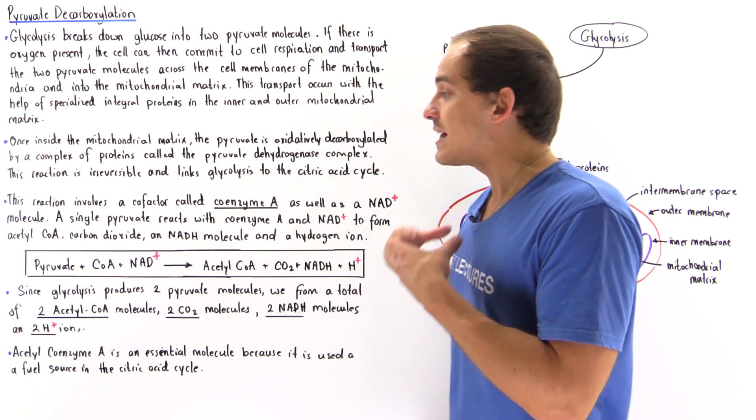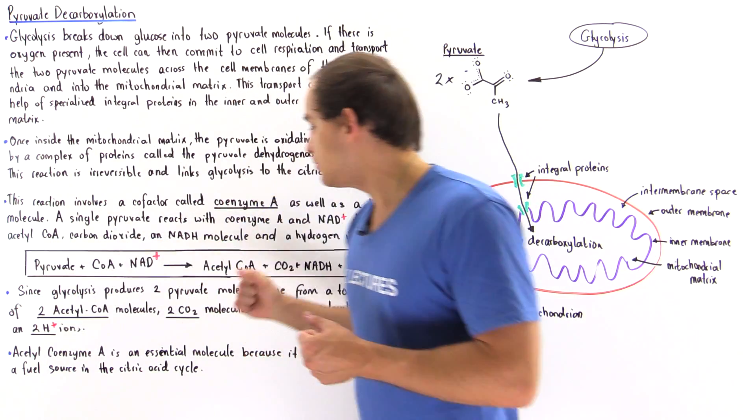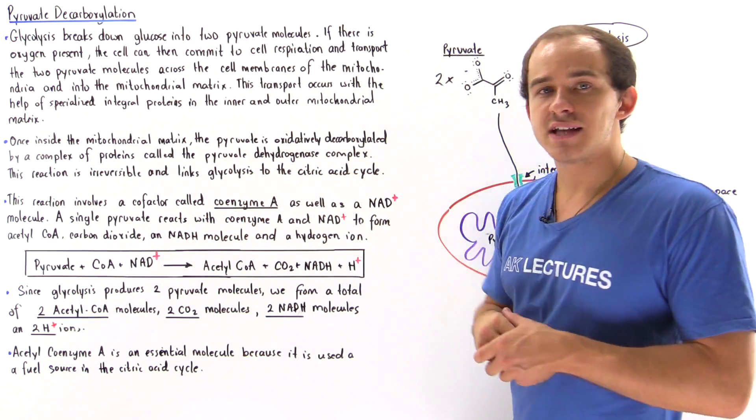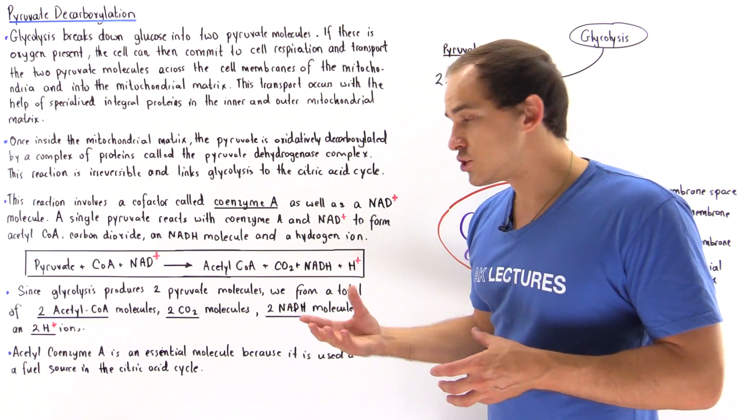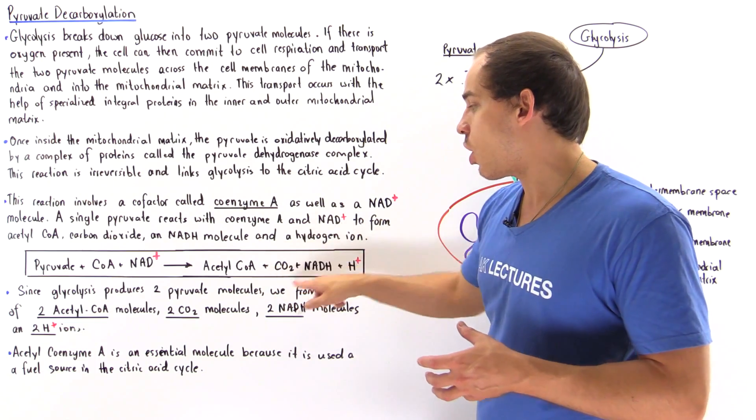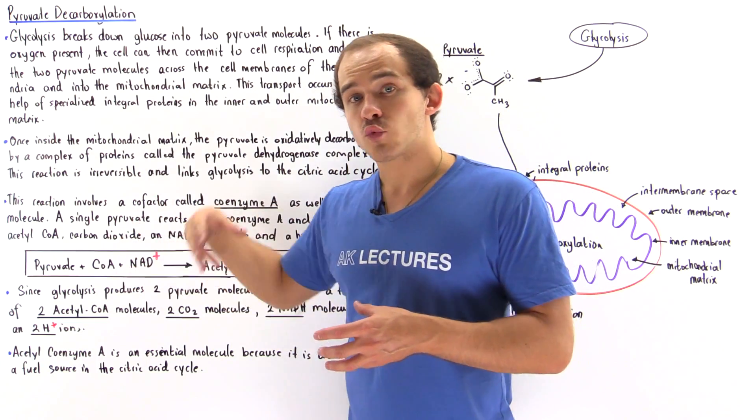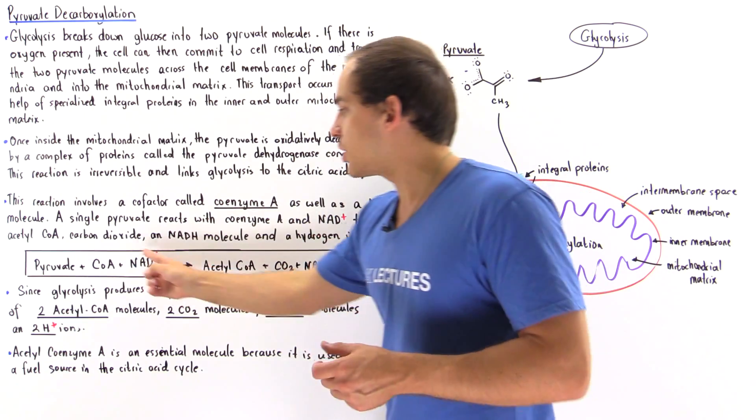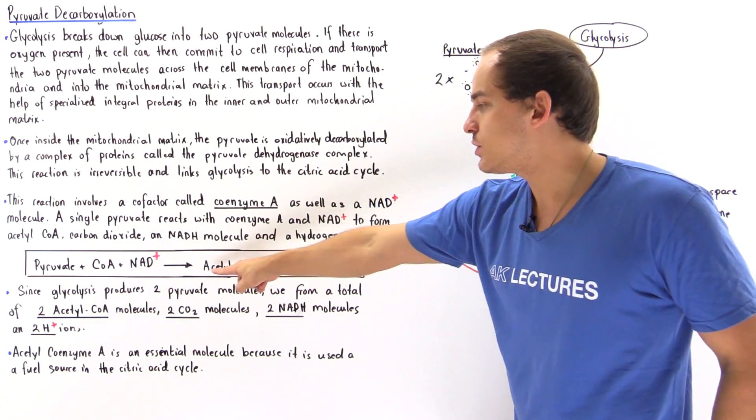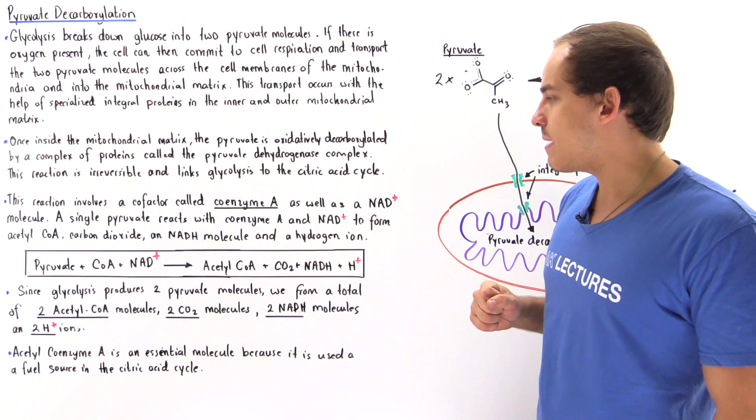It transforms the pyruvate into acetyl coenzyme A. The pyruvate is decarboxylated to produce CO2, and then the remaining two-carbon molecule mixes with the coenzyme A to produce acetyl coenzyme A.